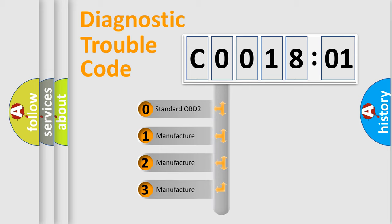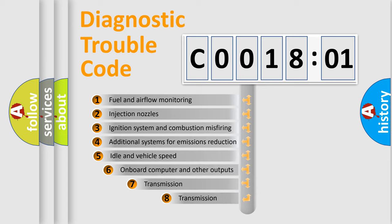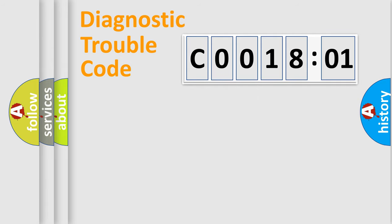If the second character is expressed as zero, it is a standardized error. In the case of numbers 1, 2, or 3, it is a manufacturer-specific expression of a car-specific error. The third character specifies a subset of errors. The distribution shown is valid only for the standardized DTC code. Only the last two characters define the specific fault of the group.